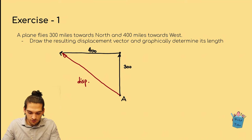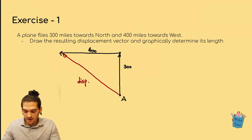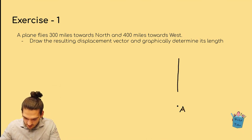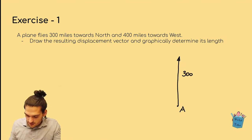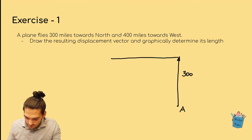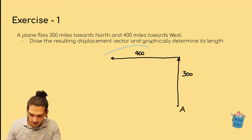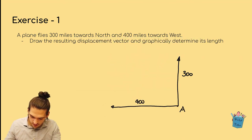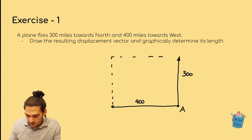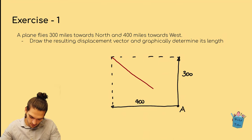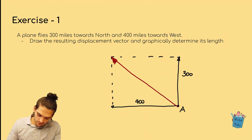Now let's solve the same exercise using the parallelogram method. Starting from A, we draw the first displacement vector of 300 miles north and the second of 400 miles west. To apply the parallelogram method, we move the second vector to the tail of the first to form a parallelogram — in this case a rectangle. The overall displacement vector is given by the diagonal of this rectangle.